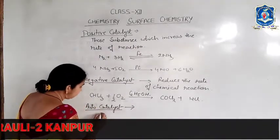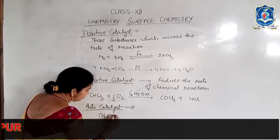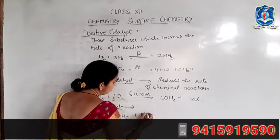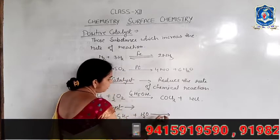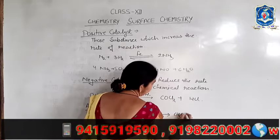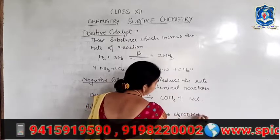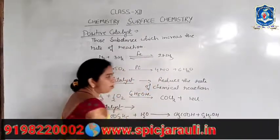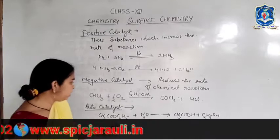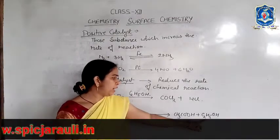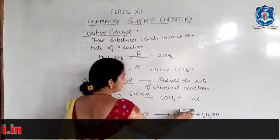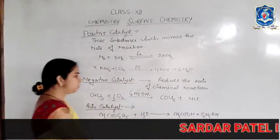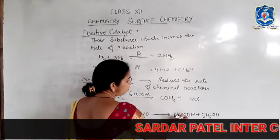For example, the hydrolysis of ester: CH3COOC2H5, when hydrolyzed, gives CH3COOH plus C2H5OH — acetic acid and ethyl alcohol are formed. At the beginning, the reaction occurs at a slow speed, but when acetic acid is formed, the velocity of the reaction increases. Hence, acetic acid acts as an auto-catalyst.